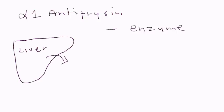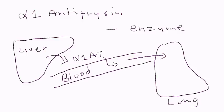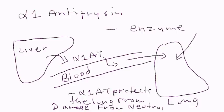Once alpha-1 antitrypsin is produced by the liver, it goes into the bloodstream. From the bloodstream, it travels to the lung. Its function in the lung is to protect the lung from damage — specifically from something called neutrophil elastase.